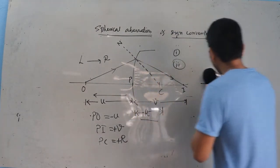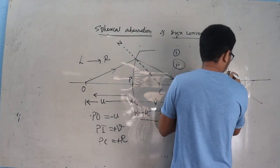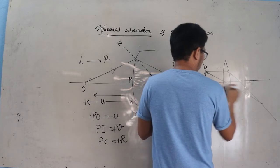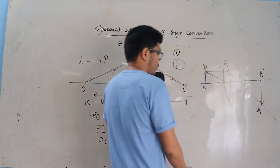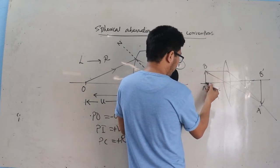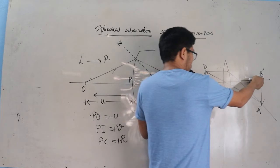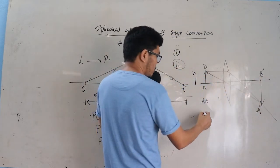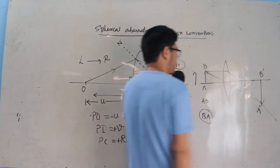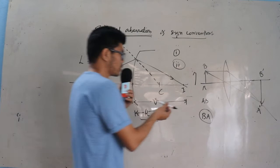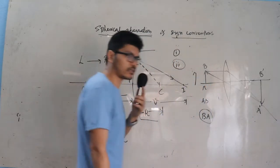The third rule says that for measurement of object and image height — say object AB and image A'B' — the height should be measured starting from the principal axis, like AB or A'B'. Never measure as BA; that is wrong. The correct measurement of height should be AB or A'B', meaning the height measurement should always start from the principal axis.